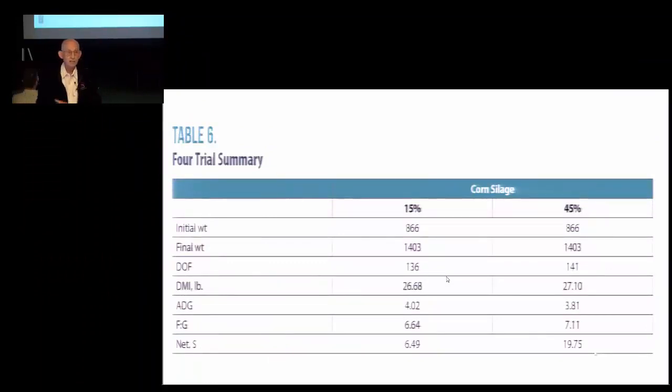Galen used a five-trial summary. I've used the first four trials out of that. And because they were fed the same number of days, I adjusted this to equal final weights and then added the days that it would take to get to that. And he's discussed the biology. So if you look at the net dollars down at the bottom at 15% corn silage for those, it was $650 per head, whereas with the 45% silage, it was $1975. So it was more economical in those four studies, but where the cattle were fed the same number of days and I made an adjustment. More economical to do the high level of silage.